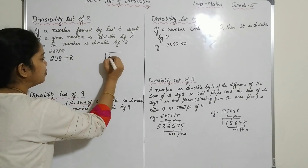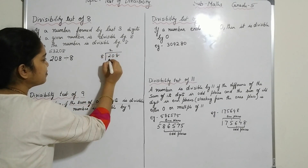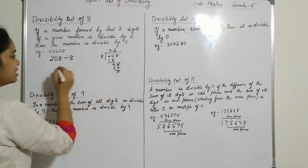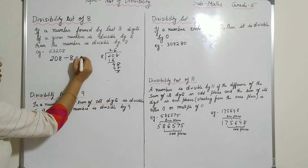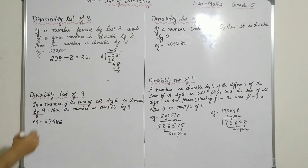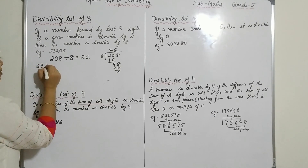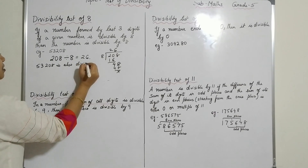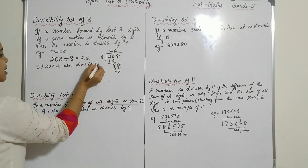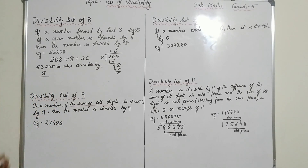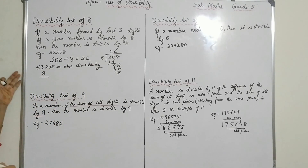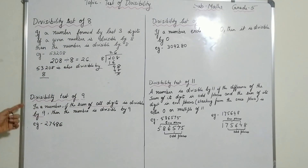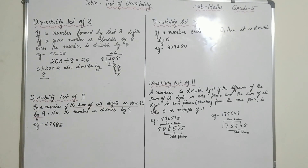Let's check whether 208 is divisible by 8 or not. We can see that 208 divided by 8 gives the answer 26, with no remainder. So the whole number 53208 is also divisible by 8. We can check divisibility by 8 using this rule: check whether the last three digits are divisible by 8 or not.